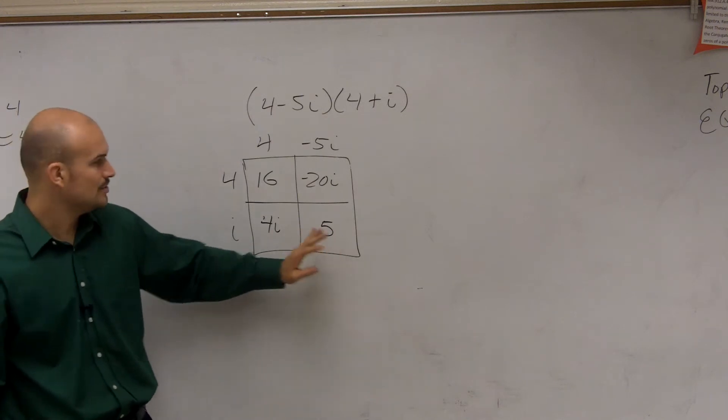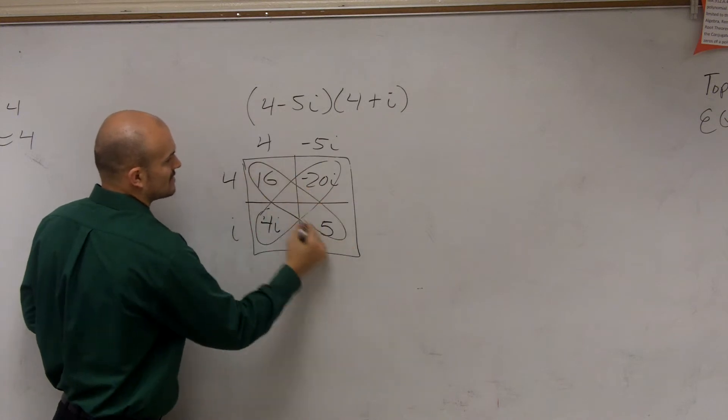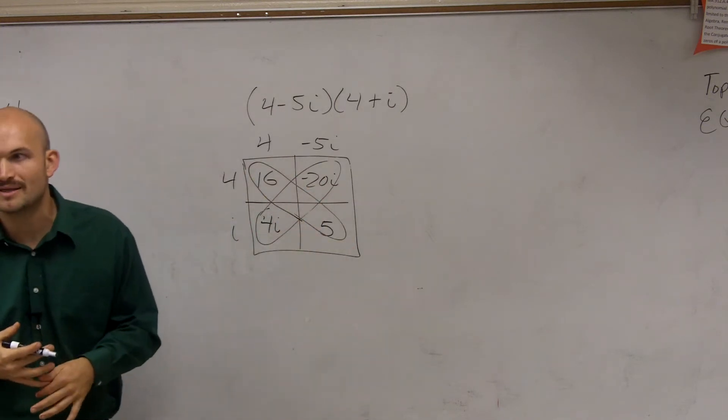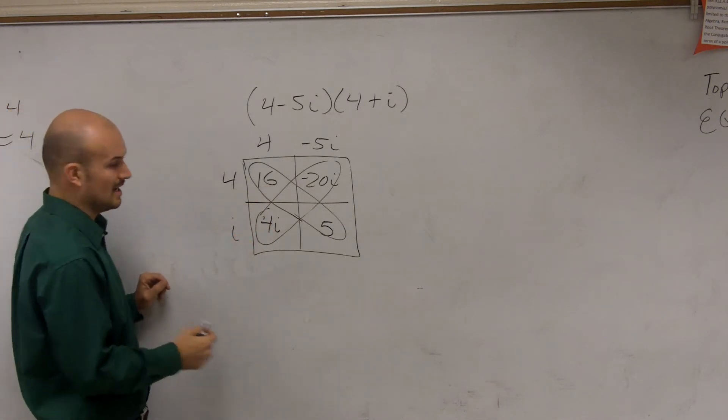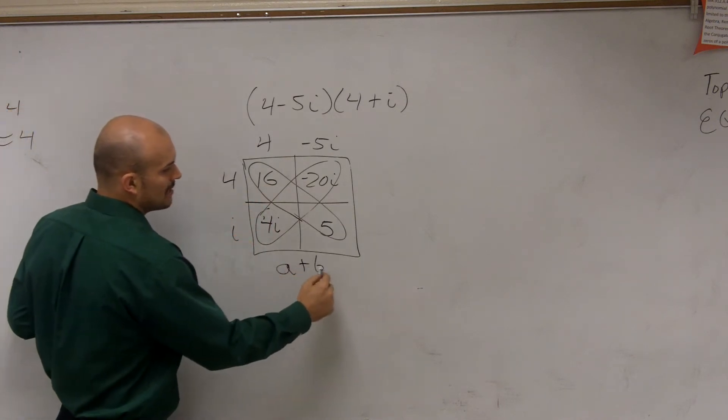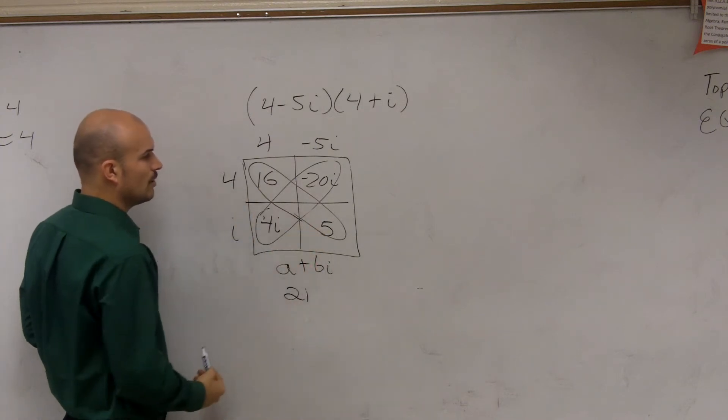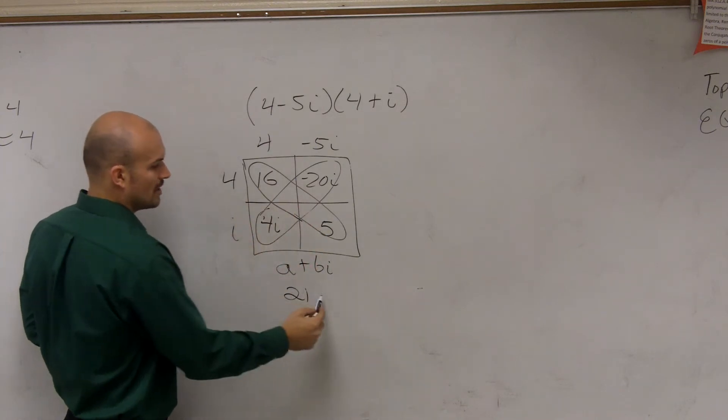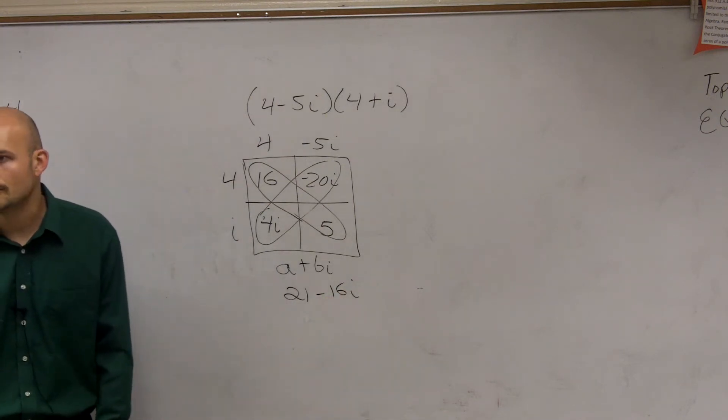Now what you notice is you can combine your diagonal boxes, and that's why I kind of just prefer this method. It just helps us organize things. So we need to make sure we write it in a plus bi, because that's complex form. So 16 plus 5 is 21. 4i minus 20 is negative 16i. And there's my final answer.